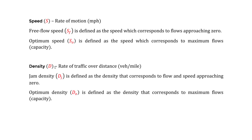Density is denoted by D — some books use K, but the handbook uses D. It's the rate of traffic over distance, in vehicles per mile per lane. Jam density, Dj, is the density when flow and speed both approach zero — this is stop-and-go congested traffic. Optimum density is the density corresponding to maximum flow, which is capacity.